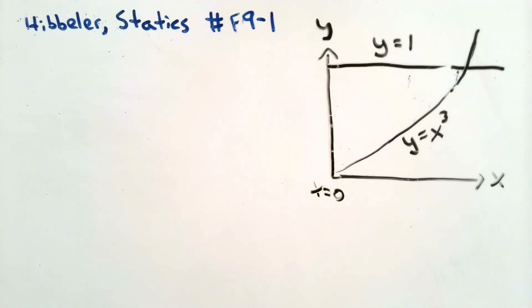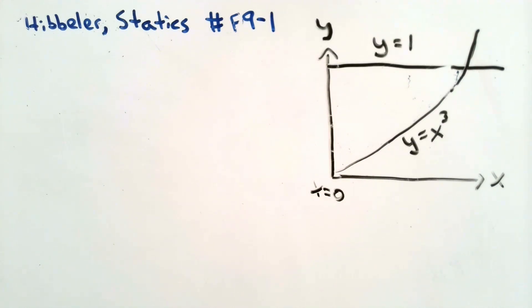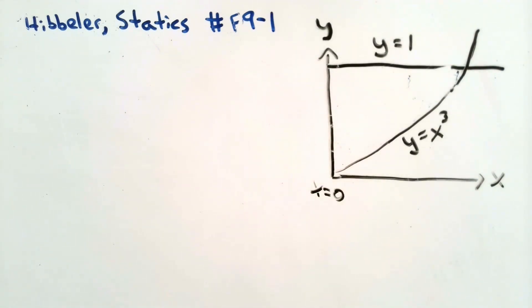In this problem, we are given a shape bounded by the lines x equals 0, y equals 1, and y equals x cubed. And we're asked to find the centroid of this area.